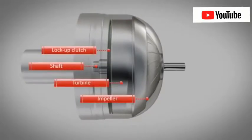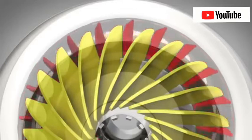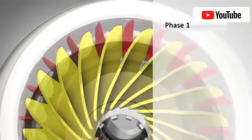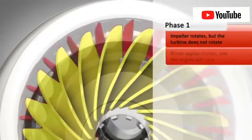Torque converters have three stages of operation. The first phase is called stall. Here, the engine applies power to the impeller, but the turbine does not rotate because the driver keeps his or her foot on the brake at traffic lights. So the vehicle does not move.